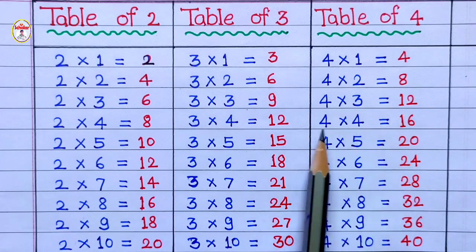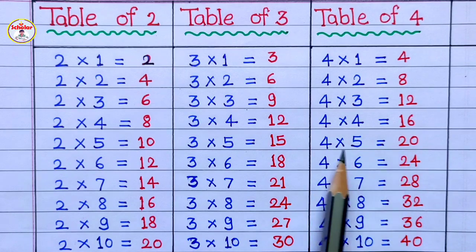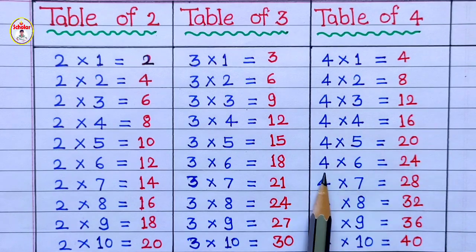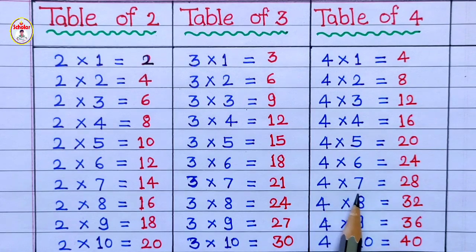Table of 4: 4 4's are 16, 4 5's are 20, 4 6's are 24, 4 7's are 28.